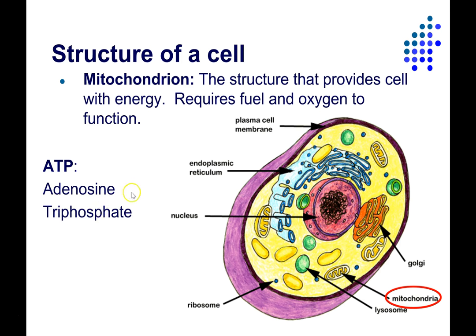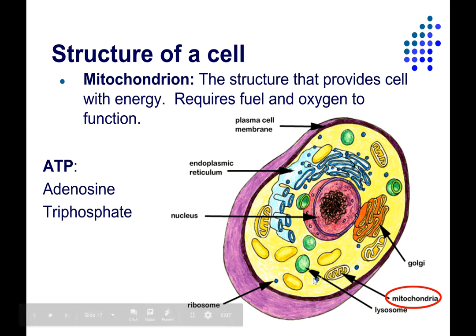Why go through this process? An analogy would be using diesel fuel to run your blender. You could have diesel-powered appliances, but it's just not very efficient. It makes more sense to convert diesel fuel into electricity — electricity is easy to use and clean. That's sort of what the cell does. The ATP is a very convenient source of energy. The adenosine molecule has three phosphate molecules attached, and each bond contains energy. When you pop off that phosphate, you release the energy, which can be used to run all sorts of functions inside the cell.